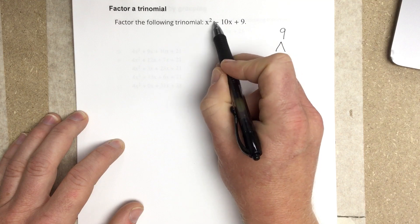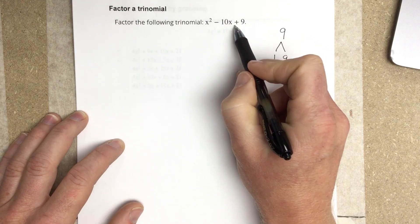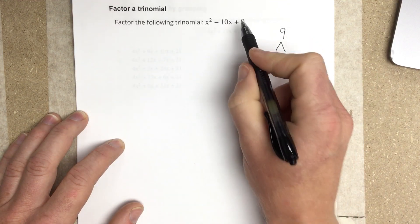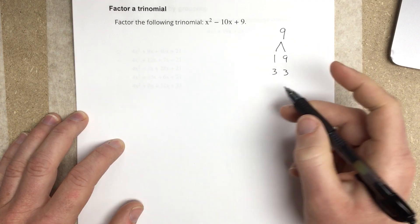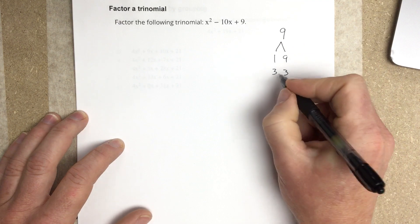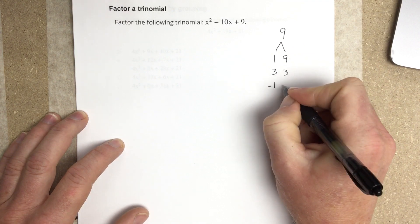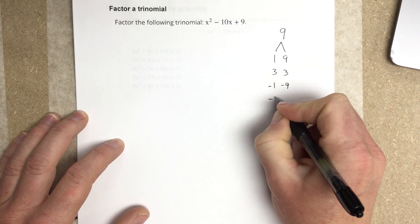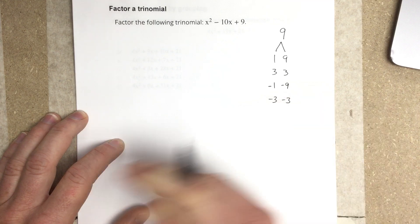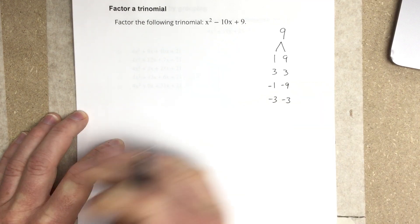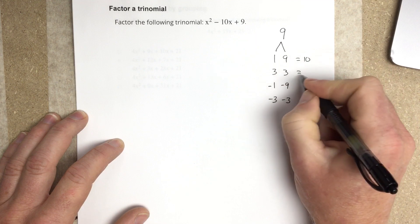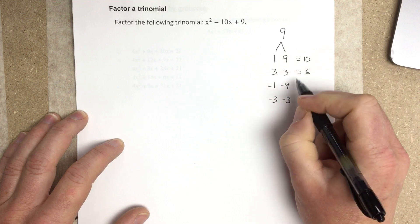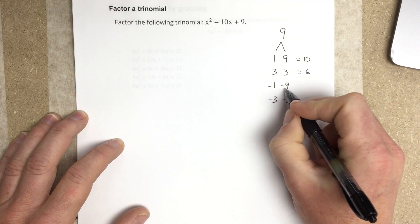And because this is negative in the middle and this is positive on the end, the only way to get a positive 9 here is to either multiply by two positive numbers or multiply by two negative numbers. So I'm going to write out the negative factors as well for 9. And then we're going to add those up. So 1 plus 9 is 10, 3 plus 3 is 6. And we're looking for negative 10. Negative 1 and negative 9, that's negative 10.